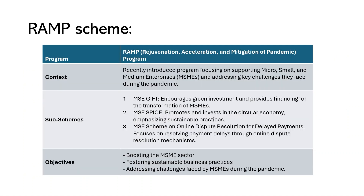RAMP — Raising and Accelerating MSME Performance — was recently introduced, focusing on supporting micro, small and medium enterprises and addressing key challenges they face during and after the pandemic. It is a Central Sector Scheme with 100% funding from the Union Government, begun in 2022-23. That brings us to the end of this episode of Current Connect. For more detailed explanation, please go through the last six months current affairs PDF compilation provided in the description. Thank you for joining us — stay curious and keep exploring.